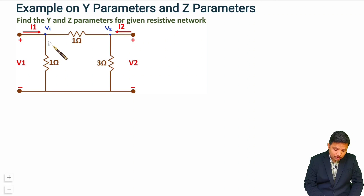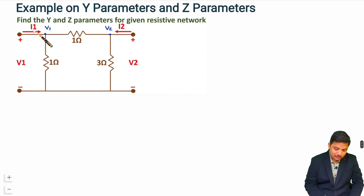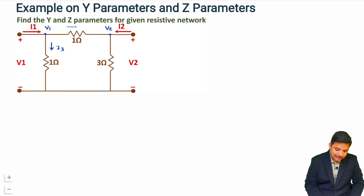Let us assume currents in the other branches. So i1 and i2 are given. Let us consider current i3 in one branch, current i4 in another, and current i5 in the third branch.